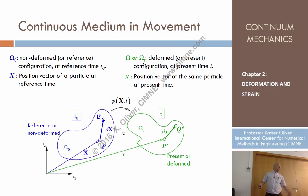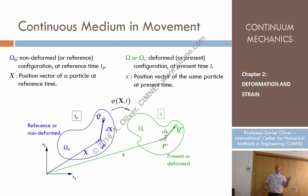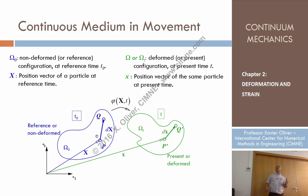And differential of capital X describes the relative position of particles P and Q at the initial or reference configuration. Our first goal in this chapter is to describe the relation between d small x and d capital X — what is the relation of the relative position of these two particles along time in terms of their relative position at the reference time?